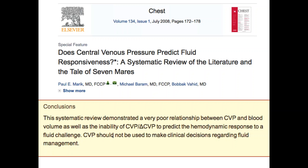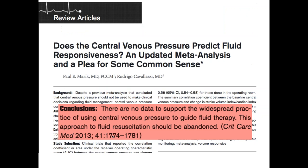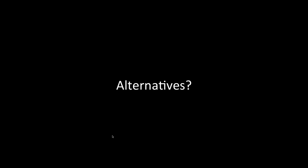CVP became very popular as an alternative to pulmonary wedge pressure. However, multiple systematic reviews have now shown CVP to have less predictive value as a lone value — with sensitivity and specificity of about 50% in two large review studies. The analogy being: you might as well flip a coin if you're going to use CVP as your sole tool.